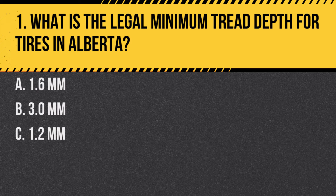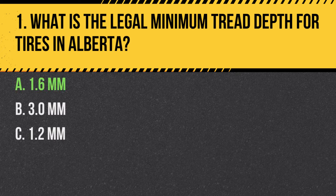Question 1. What is the legal minimum tread depth for tires in Alberta? a. 1.6 mm. b. 3.0 mm. c. 1.2 mm. Answer: a. 1.6 mm. The legal minimum tread depth for tires in Alberta is 1.6 mm to ensure adequate grip on the road.